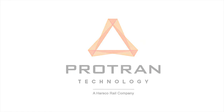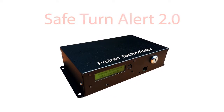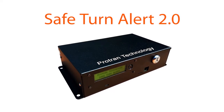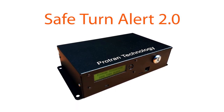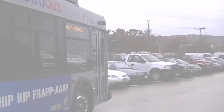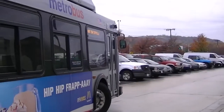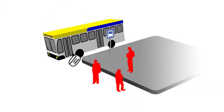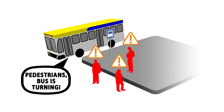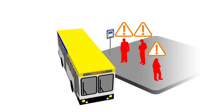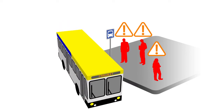The Safe Turn Alert 2.0 system by Protran Technology is a bus-to-pedestrian and bus-to-cyclist accident mitigation device. It is a secondary warning system designed to give pedestrians and cyclists in the crosswalk an advance audible and visual warning when the bus is making a turn.